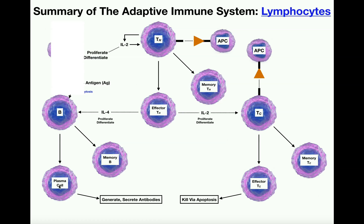The other cell type that B cells differentiate into is specifically called a plasma cell — they're essentially the effector B cells. Plasma cells function very differently than effector T cells. They don't actually leave the secondary lymphoid organs; instead, they start secreting antibodies, which then exit the lymphoid organ and go into the lymph and the blood, making their way to the infection site to tag the pathogen.